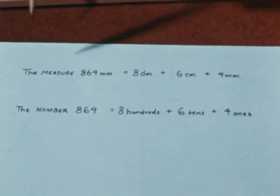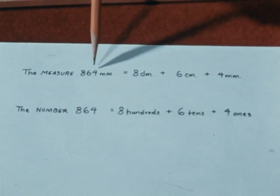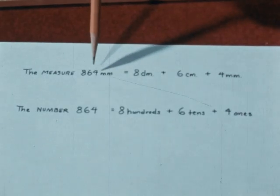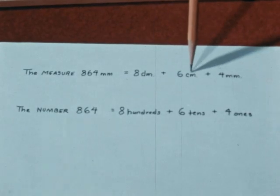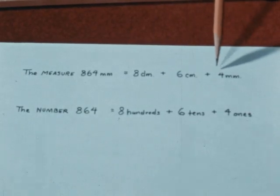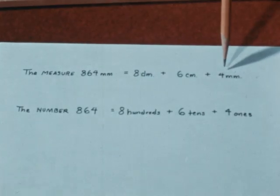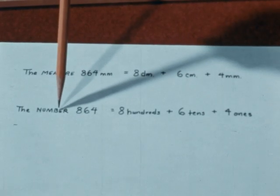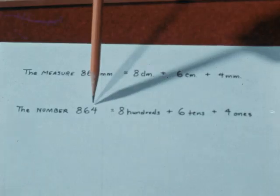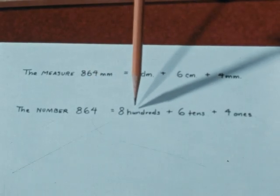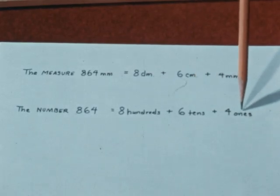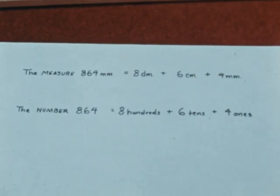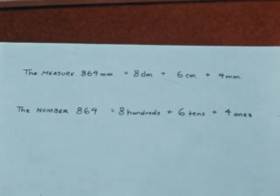Jim has found out that the measure 864 millimeters can also be thought of as eight decimeters plus six centimeters plus four millimeters — just as the number 864 can be thought of as eight hundreds plus six tens plus four ones. This is because the metric system works just like our decimal system of numeration by which we write numbers.